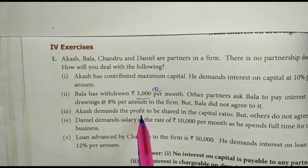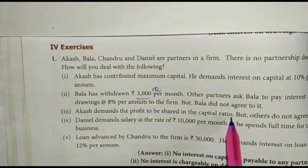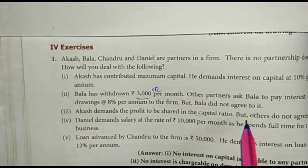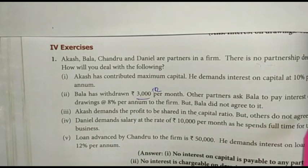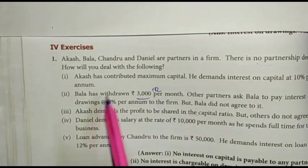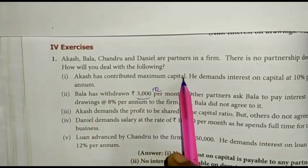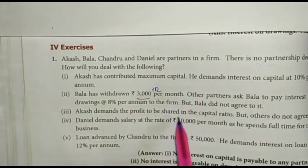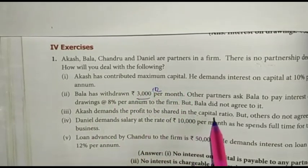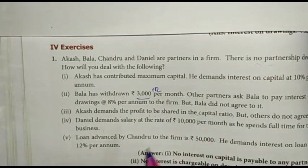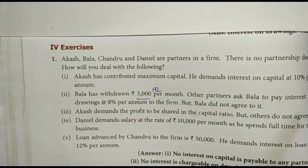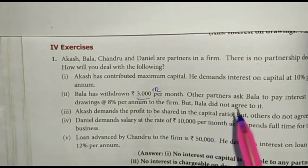Akash demands the profit to be shared in the capital ratio, but other partners do not agree. Since Akash has the maximum capital contribution but there is no partnership deed, profit should be distributed equally.